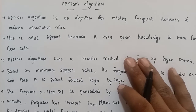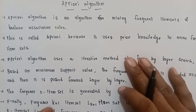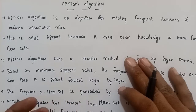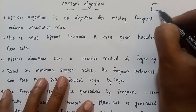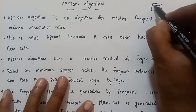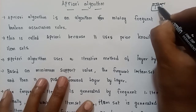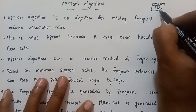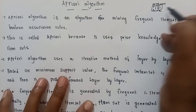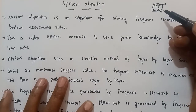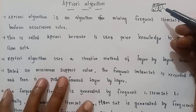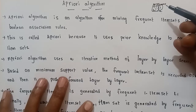The Apriori algorithm is an algorithm for mining frequent item sets and Boolean association rules. In the database, there are transactions and items — item 1, item 2, and a number of items with transaction IDs. These items are frequently repeated, and to find out frequently repeated items, we use the Apriori algorithm.